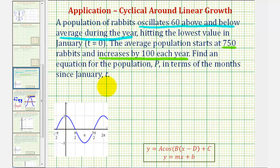So the population p of t would be equal to the oscillation part of the equation, which we just found, negative 60 times cosine of pi divided by six times t, plus the linear growth that starts at 750 and increases by 100 each year. So if it starts at 750, that would be the y-intercept of the linear part of the equation. So we'd have 750 plus the slope times the input variable, which is t.